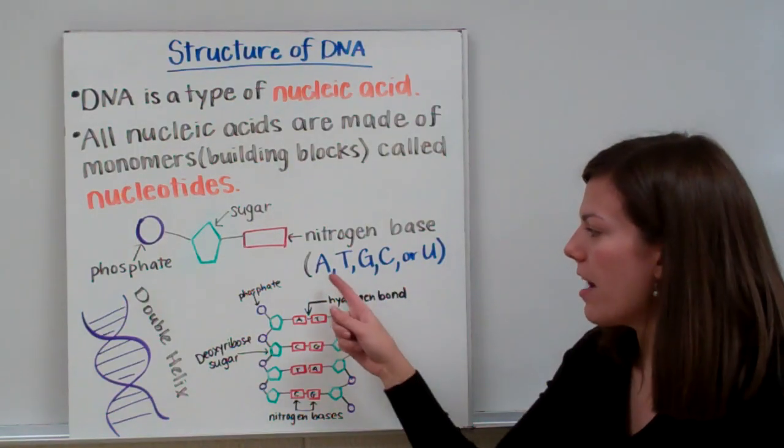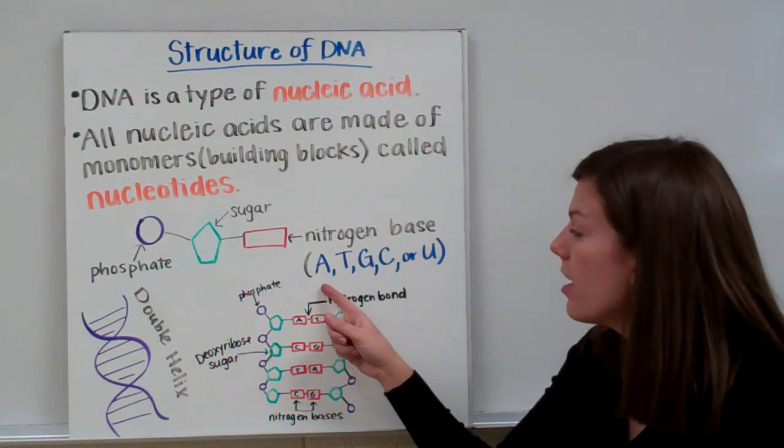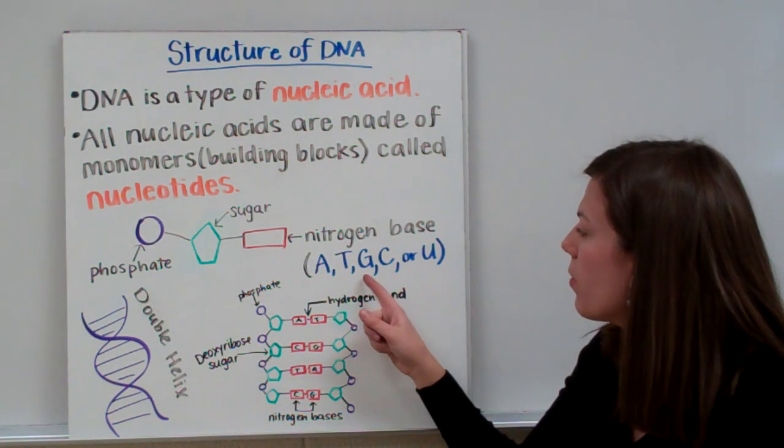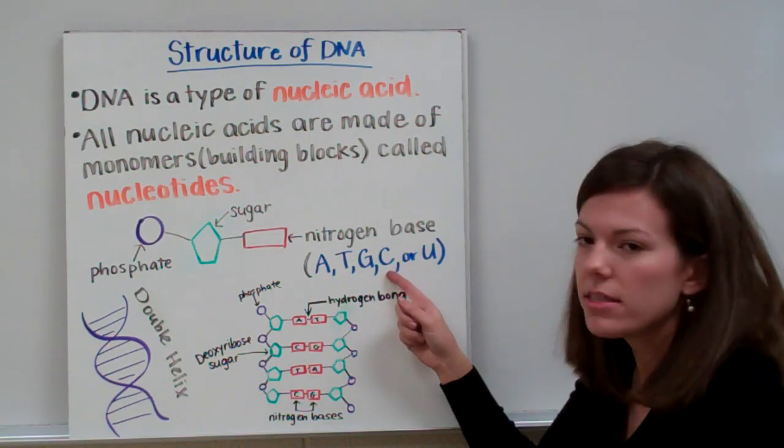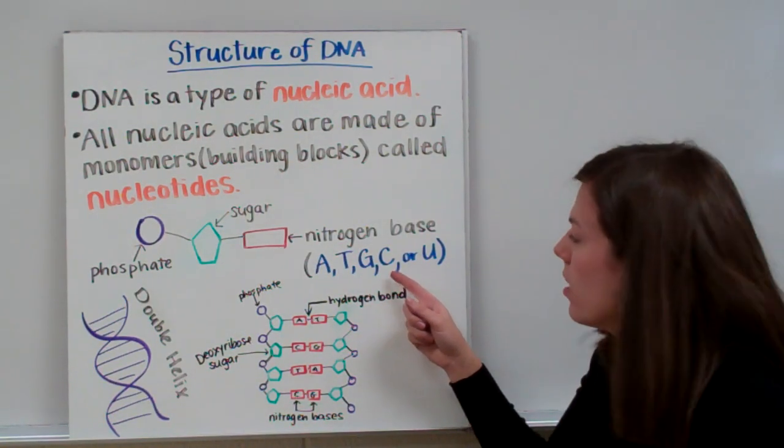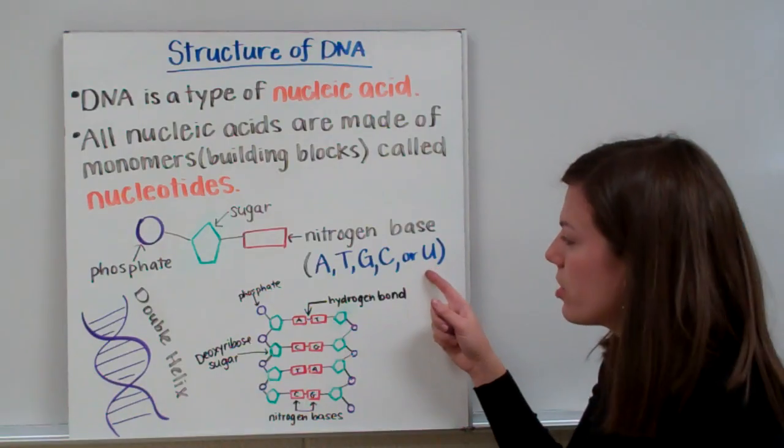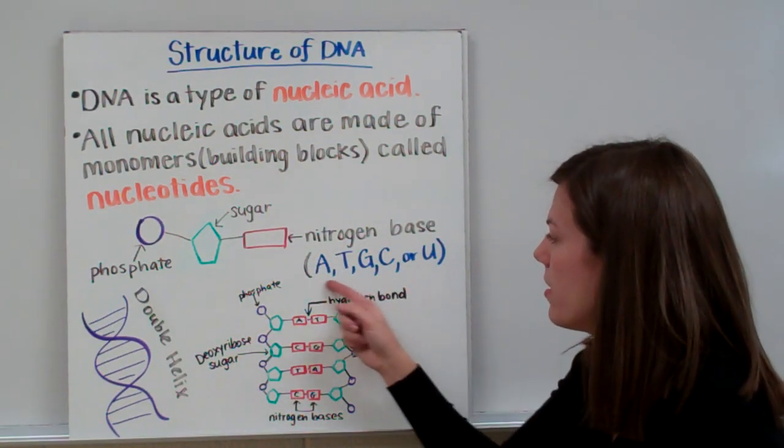Nitrogen bases can be adenine which starts with an A, thymine which starts with a T, guanine which starts with a G, cytosine which starts with a C, or uracil which starts with a U. So these red structures can be any of these.